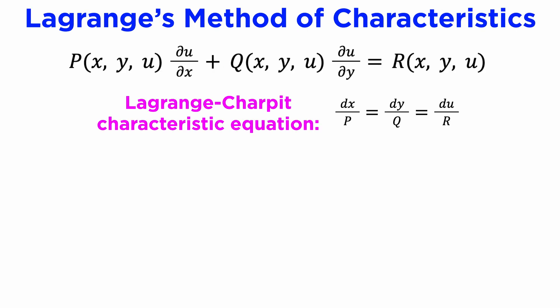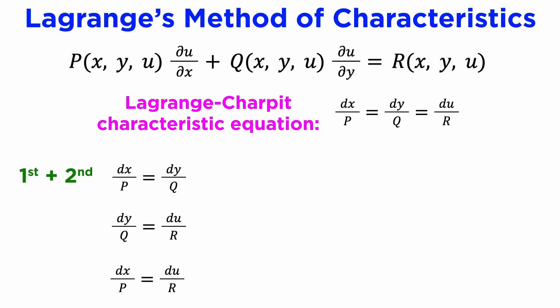Lagrange's method starts by writing down the simultaneous equation dx/P equals dy/Q equals du/R, and this is known as the Lagrange-Charpit characteristic equation. From here, we can take any pair of terms and set them equal to each other — we get three possibilities. From the first and the second, we get dx/P equals dy/Q, which gives us dy/dx equals Q/P.